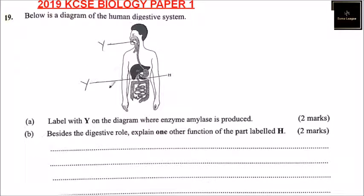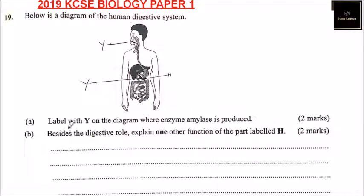Question number 19. Below is a diagram of the human digestive system. We have a human being with the digestive system shown and labeled Y and H.